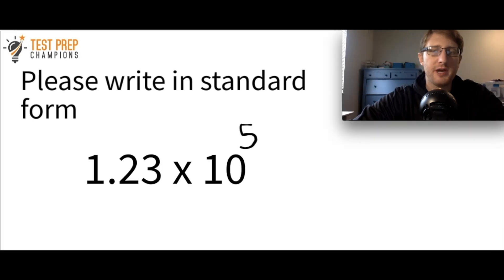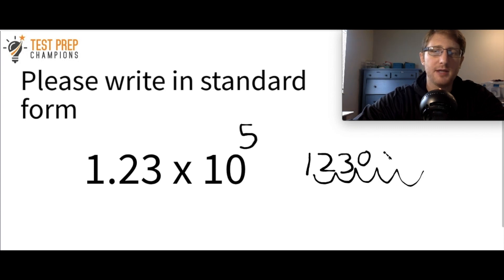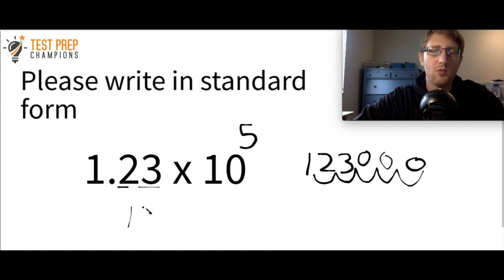Now we have 1.23 times 10 to the fifth. Starting with one, two, three — the decimal begins between the one and the two — and I want to go five places to the right: one, two, three, four, five. Filling in the zeros gives us 123,000. If you use the faster method, notice there are two digits to the right of the decimal, so you do five minus two, which is three — giving three zeros.